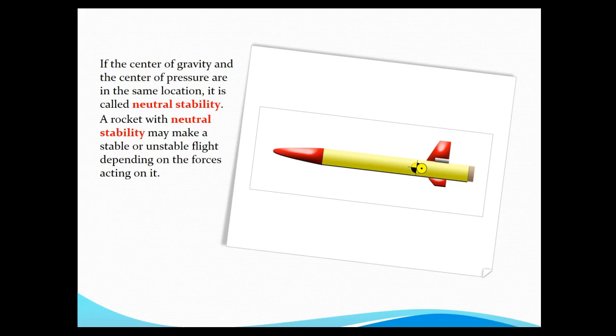There's another condition called neutral stability. Neutral stability is where the center of pressure and the center of gravity are essentially in the same place. Now you might say, well, that's pretty beneficial. And actually for a rocket, it's not beneficial. You don't know if it will fly stable or unstable. Unstable is a very undesirable, undesirable thing. So we don't want neutral stability. And again, that's where the CG and the CP are very, very close.